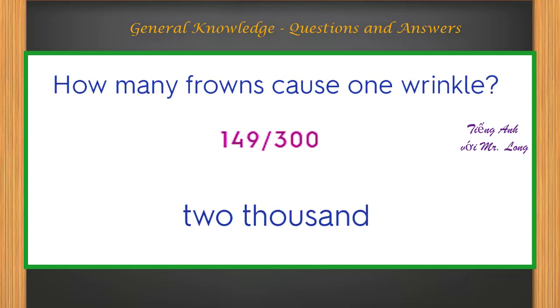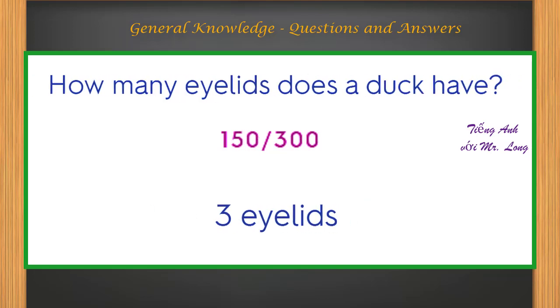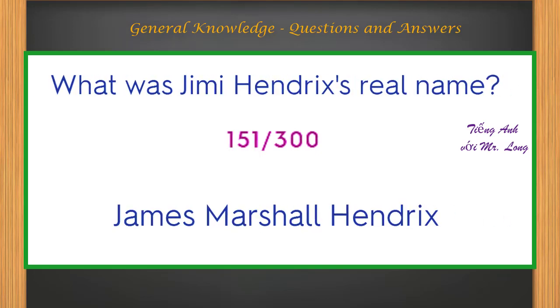How many frowns cause one wrinkle? Two thousand. How many eyelids does a duck have? Three eyelids. What was Jimi Hendrix's real name? James Marshall Hendrix.